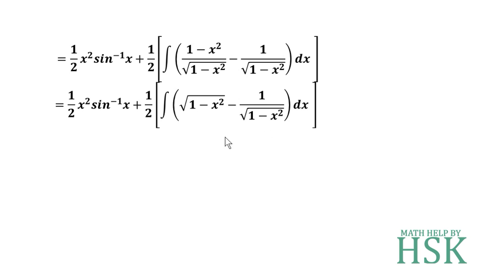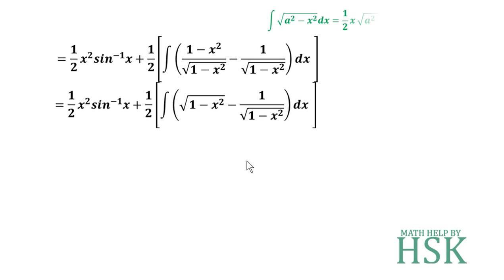We can now integrate directly. The integral of 1/√(1−x²) is sin⁻¹(x), which is a known formula. For √(1−x²), we use the standard formula: ∫√(a²−x²) dx = (1/2)x√(a²−x²) + (1/2)a²·sin⁻¹(x/a) + C.